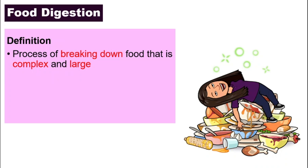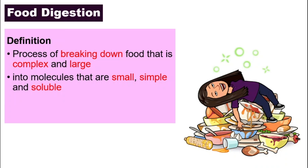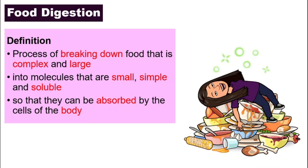Number one, it is the process of breaking down food. Digestion takes something that is complex and large — the food that we eat is quite complex and large — and breaks it down. That is the second point: into molecules that are small, simple, and soluble. Why? Because only then will they be able to be absorbed by our body.